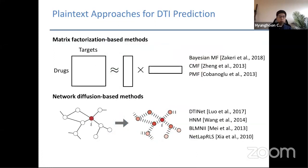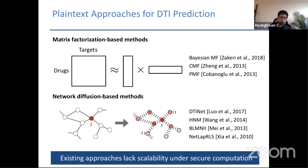How is DTI prediction normally done in plaintext? There are two main branches. One is based on matrix factorization, where known interactions are represented as a sparse matrix and low-rank matrix factorization is applied to find structure and fill in missing entries. A different branch views the interaction matrix as a graph and applies algorithms like network diffusion or random walk processes to propagate information and predict missing edges. Taking these state-of-the-art plaintext methods and implementing them in MPC leads to something impractical, mainly because these algorithms depend quadratically on the size of the data set — the number of drugs and targets — which is not feasible given millions of drugs.